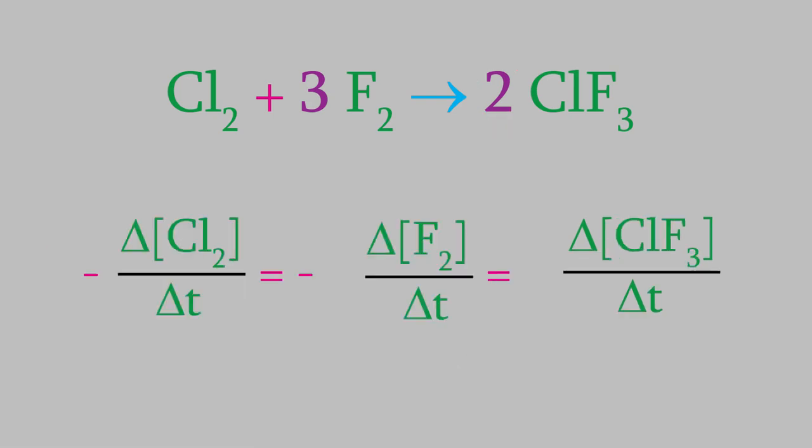That tells us that the equations we've been using so far for the rate aren't quite right. We should get the same rate no matter which compound we choose. In this example, we would get the same result for the rates with respect to chlorine and fluorine if we divided our equation for fluorine by three. In the same way, we'd get the same rate with respect to the chlorine trifluoride if we divided that equation by two. That gives us a clue we need in order to come up with a better equation for the reaction rate.